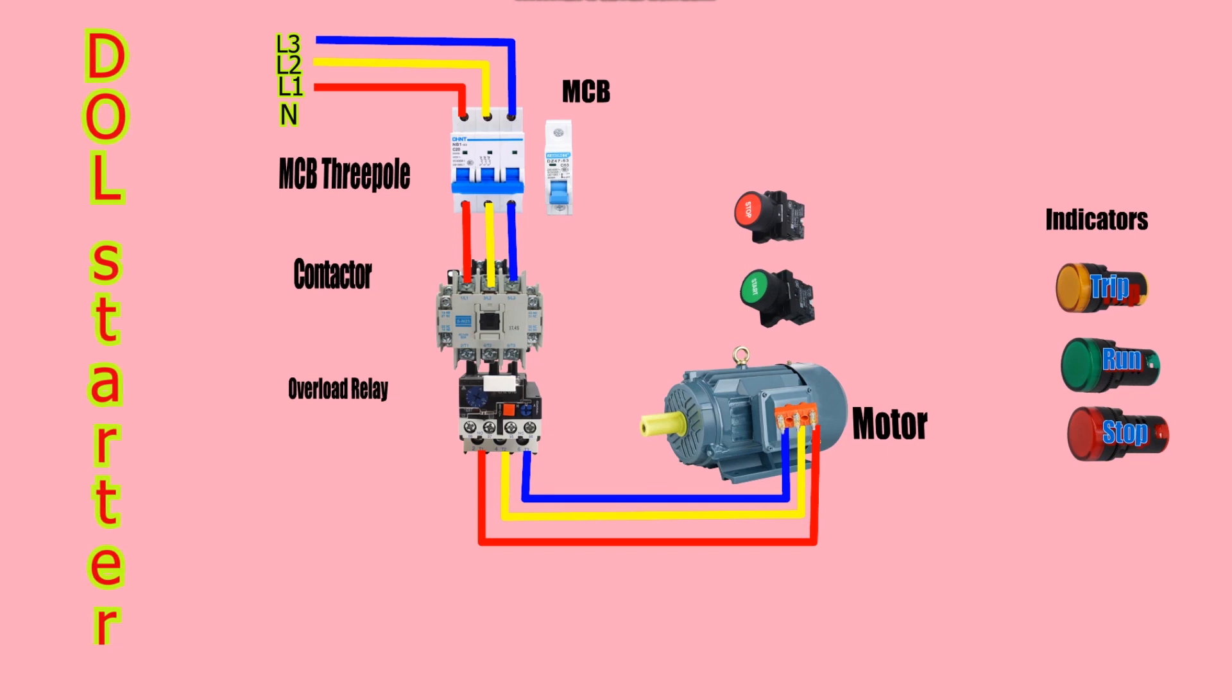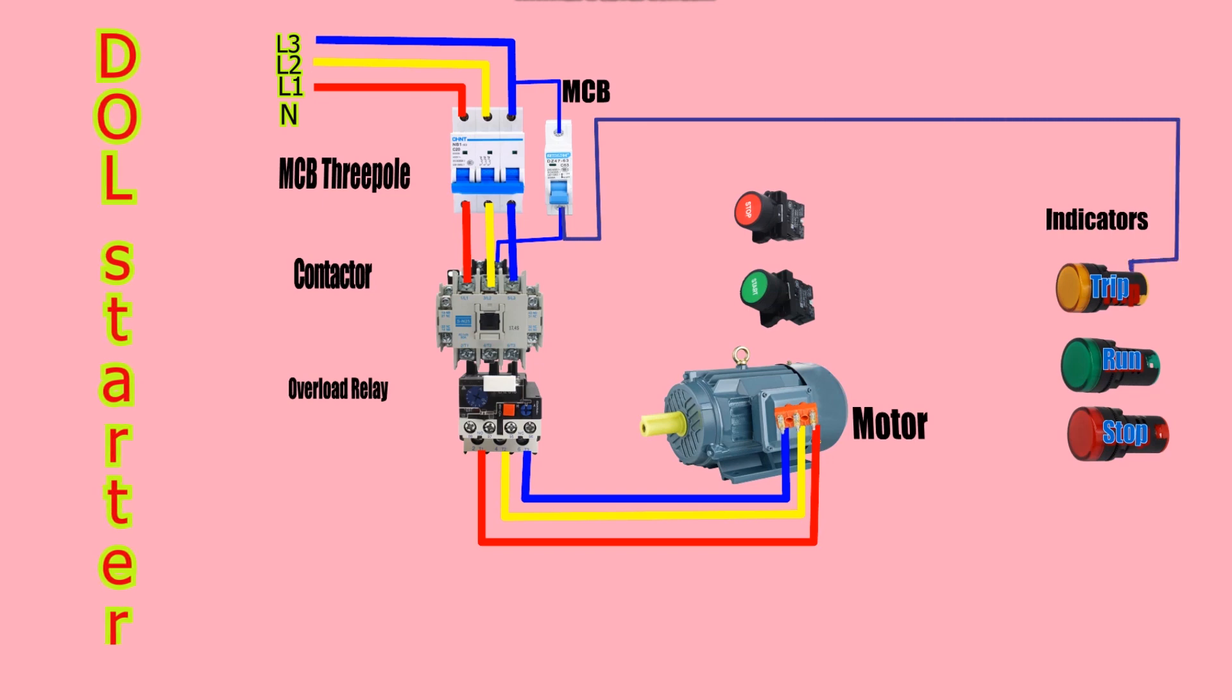To control the motor, a phase is taken from the incoming phases and given to a two-amp MCB. In the diagram provided, the blue phase is used. The output of this MCB is connected to the contactor coil A2 terminal. Another wire is taken and linked to the trip indicator lamp on one side, while looping the run and stop indicator lamps on one side with a wire.